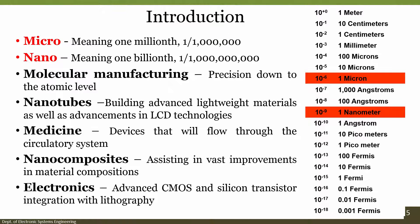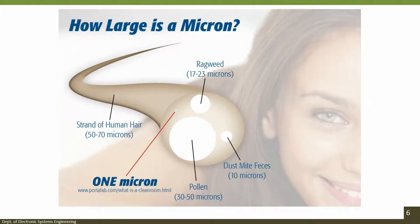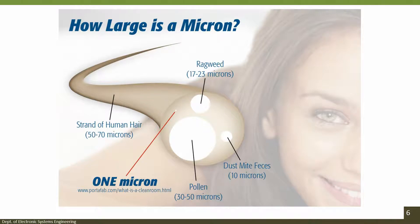We also have actuators such as piezoelectric or piezoresistive actuators, and transducers like PMUTs or CMUTs. How large is one micron? A human hair is close to 50 to 70 microns in thickness. Pollen is about 30 to 50 microns, a dust mite is about 10 microns, and red blood cell width is around 17 to 23 microns. You can see the white dot within the red circle on this slide — that dot represents one micron.